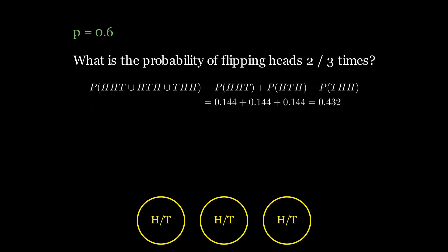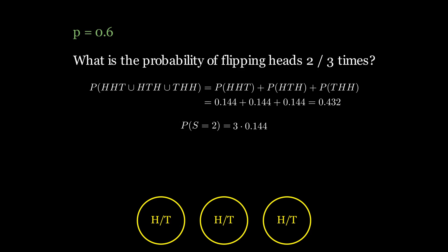The probability of getting k successes through n trials is governed by something called a binomial distribution. We can more easily compute the result above using the formula for the binomial distribution. Notice the n choose k at the beginning of the formula. This is here to compute the total number of ways you could arrange k successes through n trials. If we apply this to the answer from before, we can see that this is just 3 choose 2, which is 3. So we can get our answer by multiplying the probability of getting two heads and a tail by the total number of ways that you could arrange heads and tails.